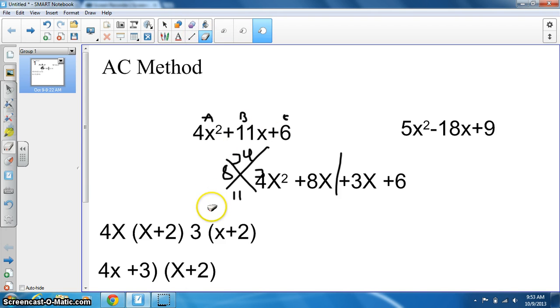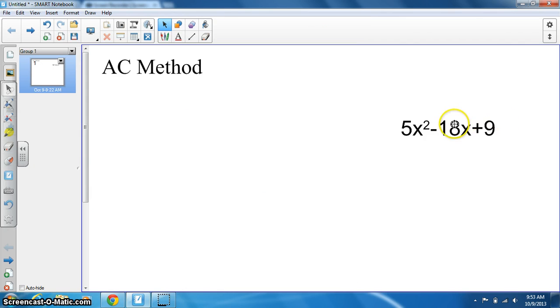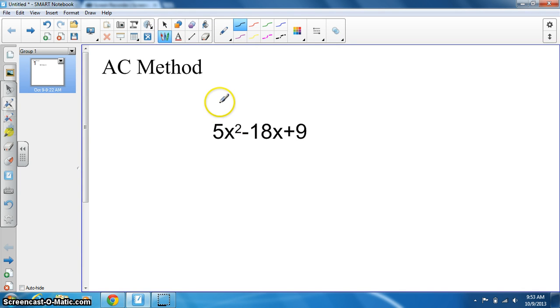Now for the harder problem, we get a negative for B. We identify A, B, and C again. Put it in a cross. We've got 9 times 5, that's 45, and we've got negative 18.